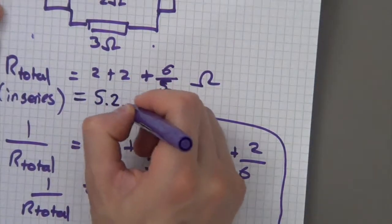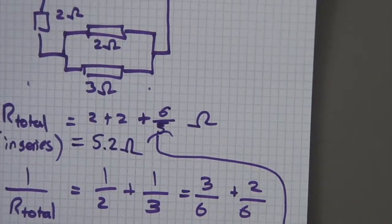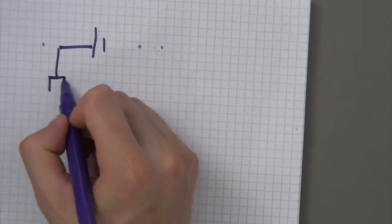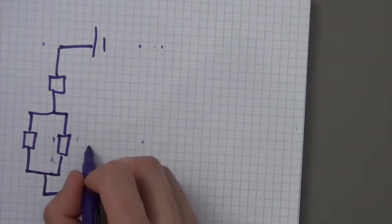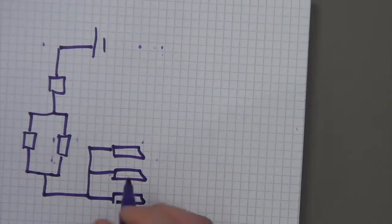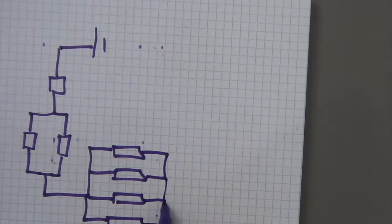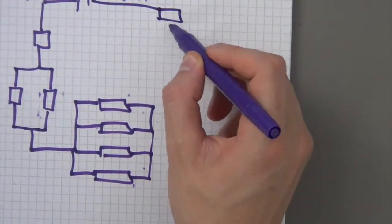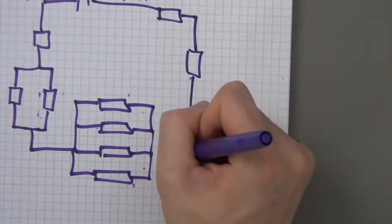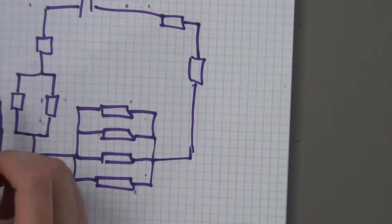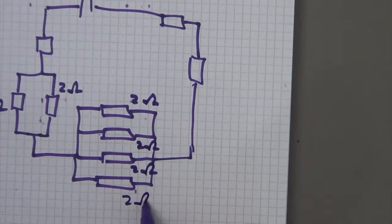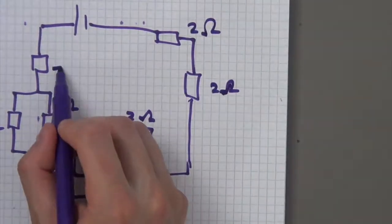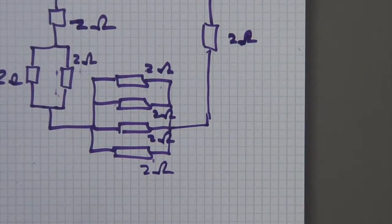That comes to 5.2 ohms as the final answer. One final example — as complicated as the exam can make it. Each resistor in this circuit is two ohms.